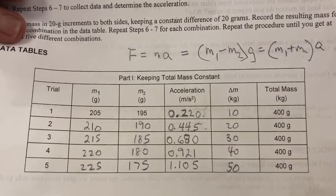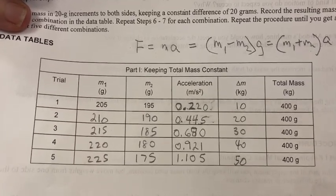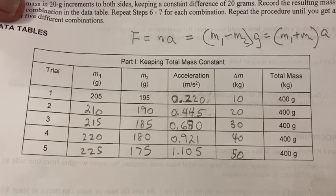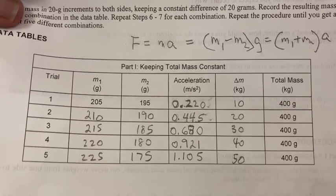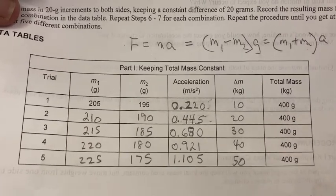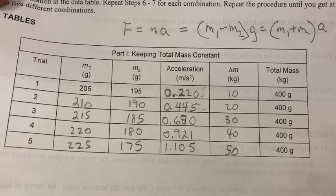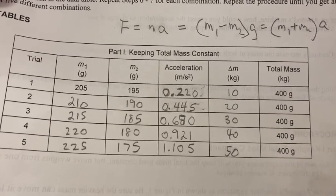Column one is a trial. Column two is the mass M1. Column three is the mass M2. And column four is the acceleration for each one.